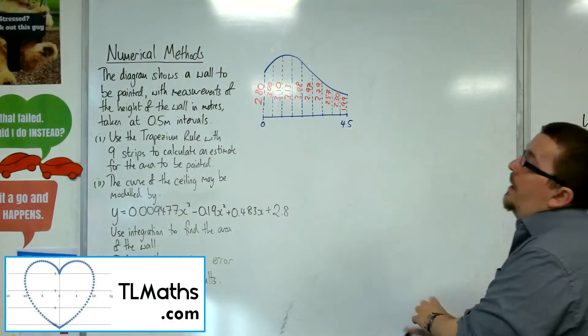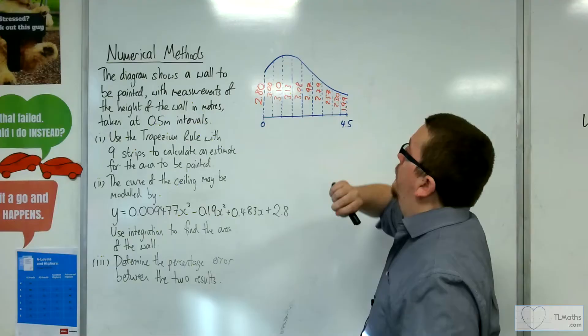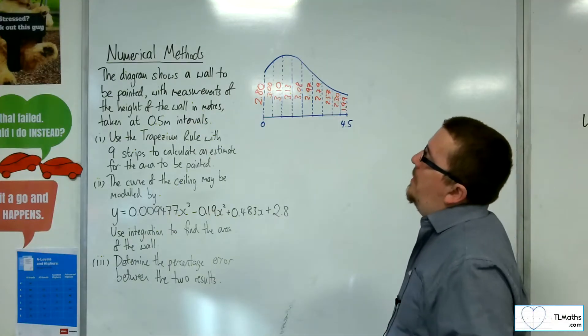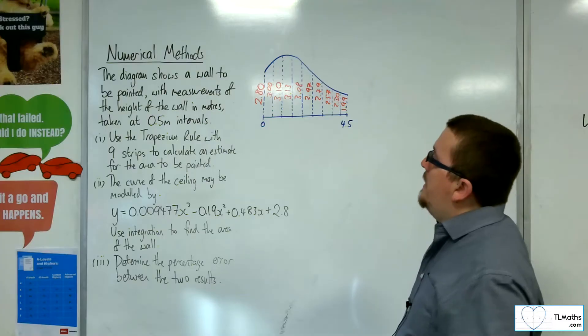Let's say we've got this wall that needs to be painted. We have been given the measurements of the height of the wall in meters taken at 0.5 meter intervals.